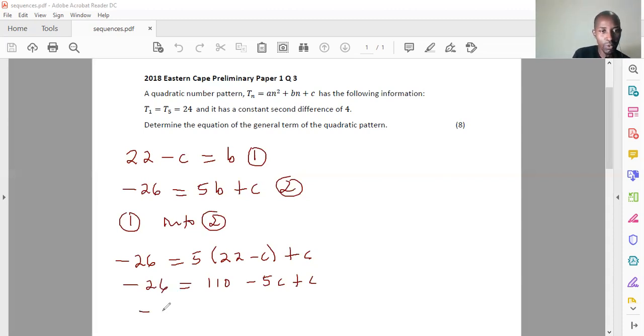I'm going to have this as negative 136 is equal to negative 4c. So then I can now get my c. C becomes equal to 34. That's it.